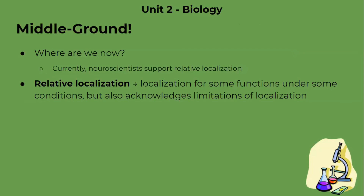We've seen research both supporting and opposing localization, so where are we now? Currently neuroscientists support something called relative localization — a middle ground where localization exists for some functions under some conditions, but we also acknowledge its limitations. Higher order functions like memory and thought can't really be localized to certain areas, but as Broca's study showed, speech production is localized in Broca's area. So some functions are localized while others are not.